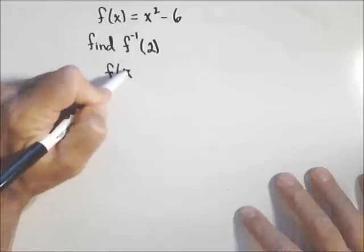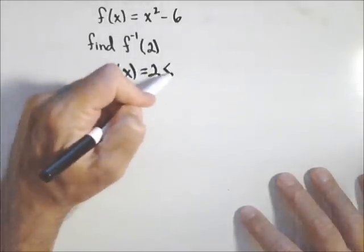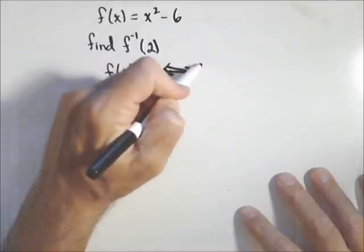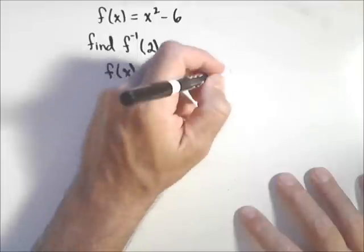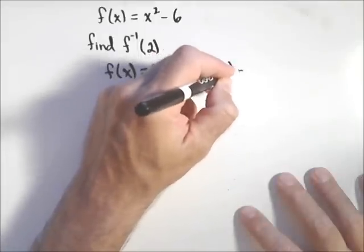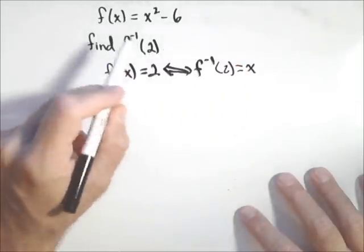In other words, f of x is equal to two means the same thing as f inverse of two equals x.